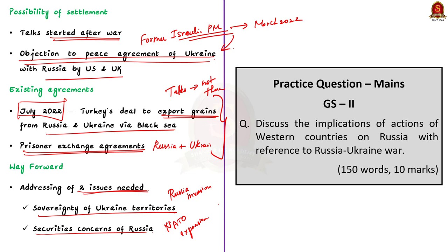These two complex issues should be addressed first, and only then can a peace plan be worked out. As of now, the war is entering into its second year, and we have to wait and see what happens. In this discussion, we saw about the current status of the Russia-Ukraine war, Russia's position, its plan, Western strategy and its impact, and the possibility of a negotiated settlement.